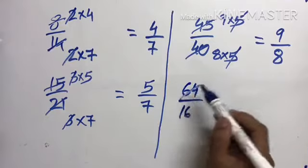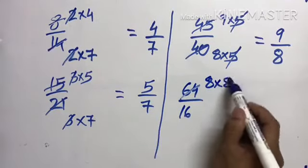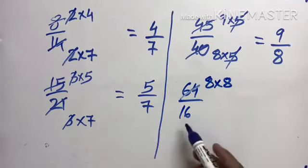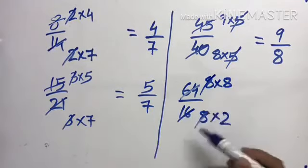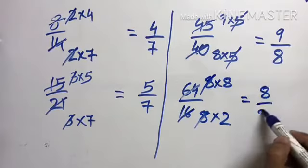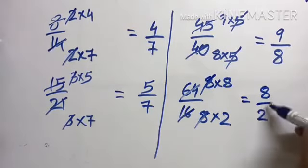Now this is 8's table. 8 times 8 is 64, and this is 8 times 2. 8 and 8 cut. This is 8 by 2, these are 2 times 4.